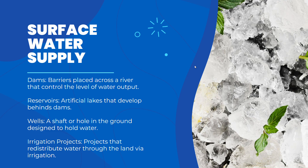Water is stored in many different places. Surface water simply refers to any water store that is on the surface of the earth, such as dams, reservoirs, and irrigation projects. However, there are other sources of water which may not be on the surface, such as aquifers and wells. A water supply is simply anywhere that stores water — you could even argue that soil is a water store.